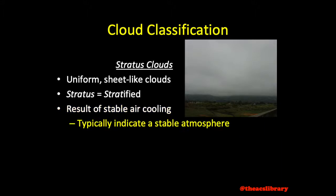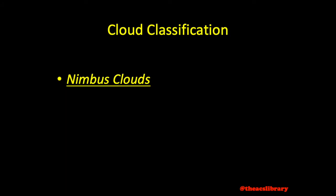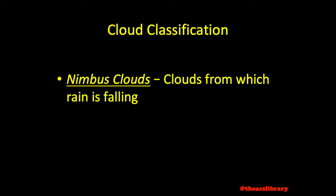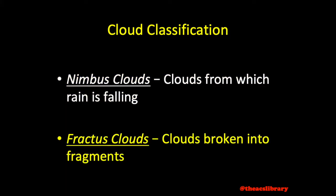Beware, as highly convective clouds may be embedded in a layer of stratus clouds, posing a threat to IFR traffic. Nimbus clouds are clouds from which rain is falling, and fractus clouds are those broken into fragments.